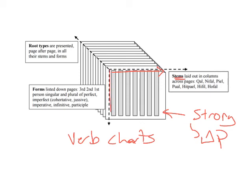Then as one makes their way down the page, this is where all the normal forms are listed. And typically, perfect will be listed at the top, then imperfect, and then the imperative, infinitive, and participle all the way down the page. Now that whole first page, then, is the strong root.